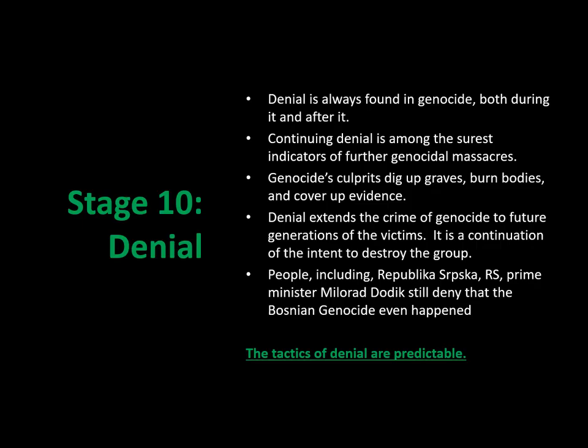The tenth stage, beyond the killing — you might think, what else is possible beyond the act of genocide itself? Well, what follows is very predictable and it happens in every instance of genocide, and that is denial. Continuing denial is among the surest indicators that a further genocidal massacre is possible or likely. Genocides' culprits dig up graves, they burn bodies, they hide or destroy evidence. Denial extends the crime of genocide to future generations of the victims, and this is still happening today, particularly in Bosnia. So the tenth stage isn't the killing — it's the denial that that killing has actually taken place, without closure, without justice and without reconciliation.